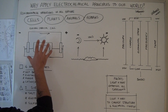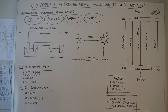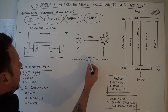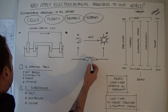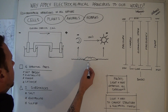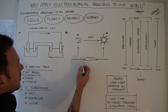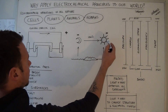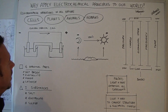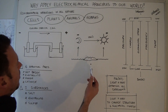Transferring this battery model over to our world, we can see the similarities. The central part I have represented as earth, which is the salt bridge. The electrolyte is the oceans. The anode is the moon and the cathode is the sun. So we can see that the three substances exist in our world.